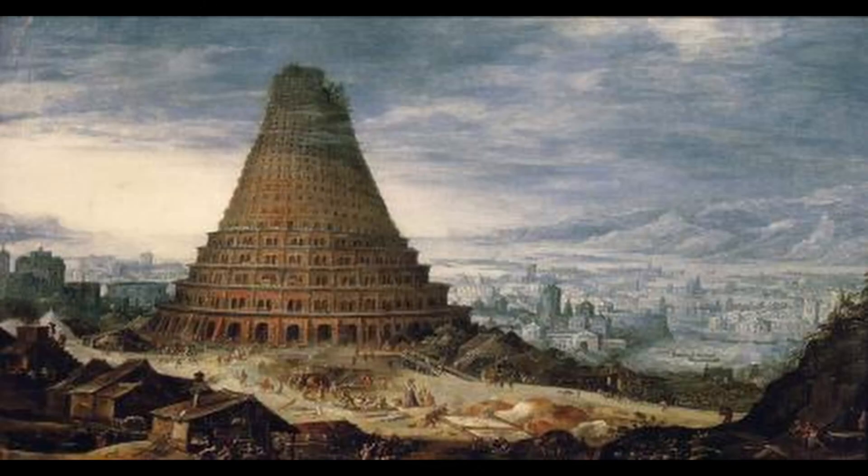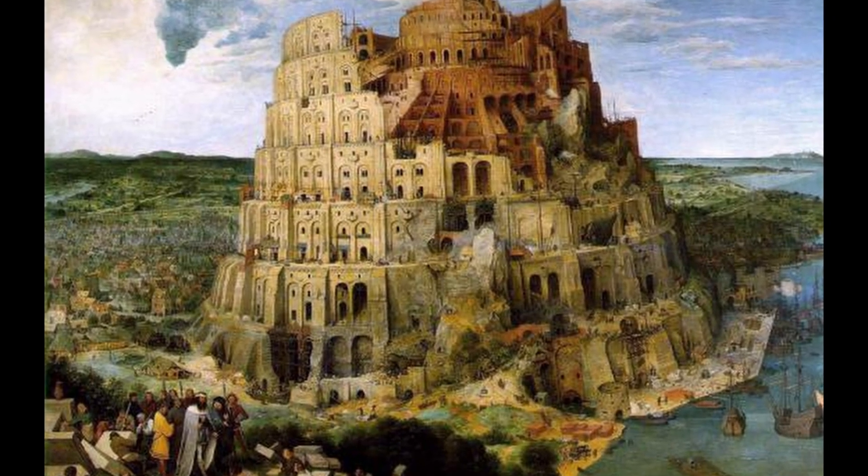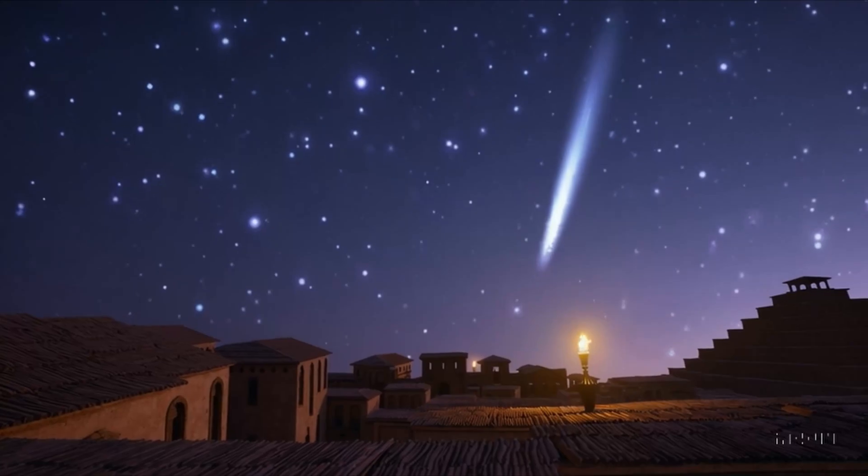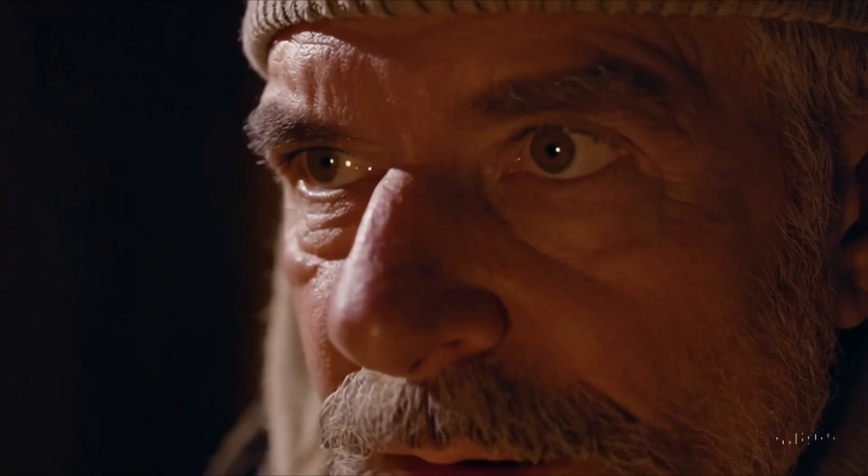The Babylonians, however, saw a different story. To them, a comet wasn't a warning of doom, but a harbinger of change. They meticulously documented celestial events, believing that the heavens mirrored the earth.